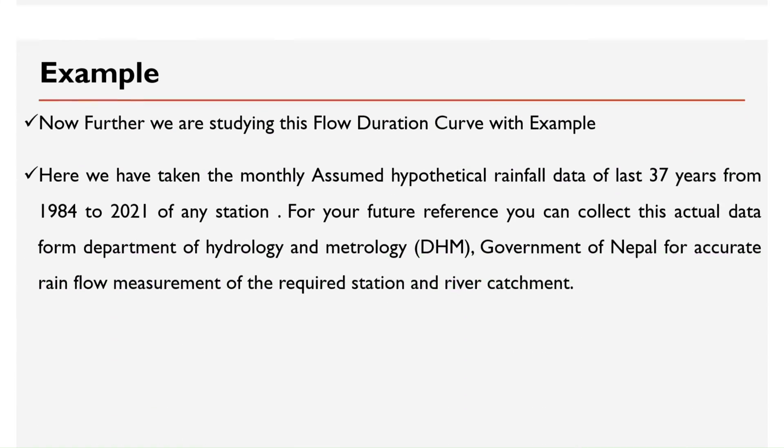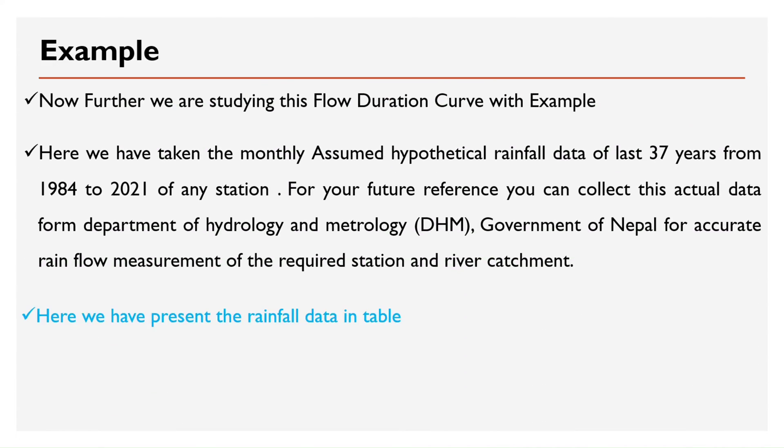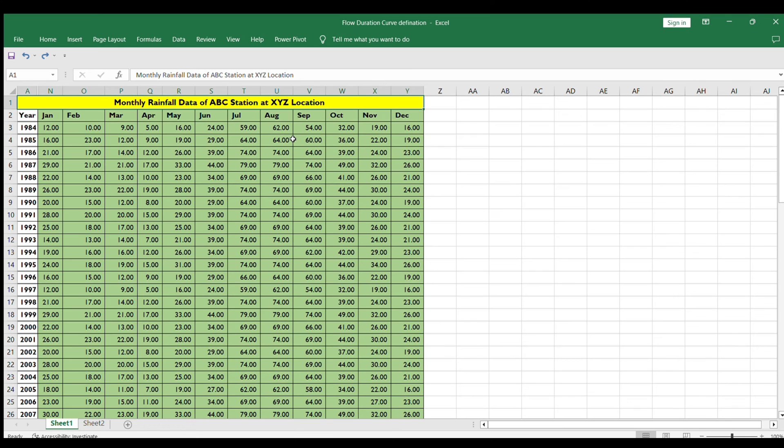Now we are studying this flow duration curve with example. Here we have taken the monthly assumed hypothetical rainfall data of last 37 years from 1984 to 2021 of any station.